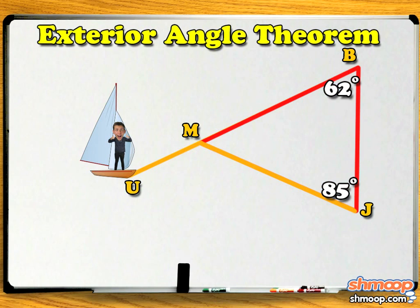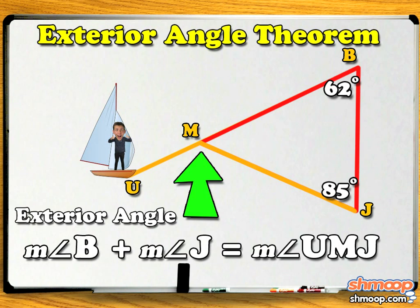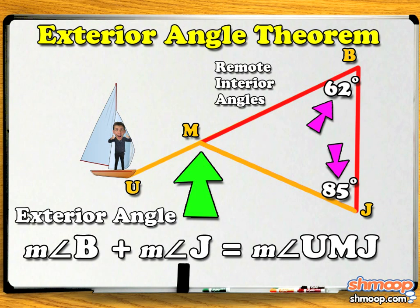The exterior angle theorem tells us that the measure of an exterior angle equals the sum of its two remote interior angles, since both are supplementary to the remaining interior angle.